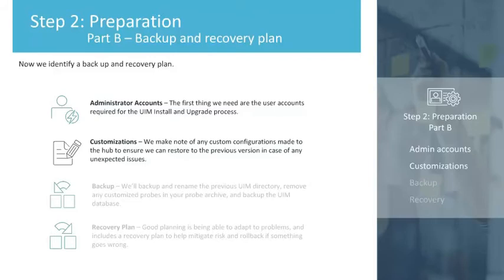The next thing we'll do is make a note of any custom configurations made to the hub, to be sure that we can restore to the previous version in case of any unexpected issues. It's been proven that a server snapshot is the best recovery plan, so we'll do that along with making a copy of the key directories — for example, directories for any integrated products and the UIM infrastructure servers and their directories. After we've upgraded your hubs, this information will help us set up your UIM environment again and will be part of the post-upgrade configuration step.